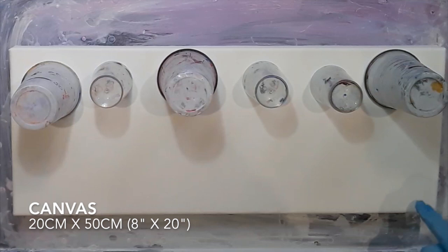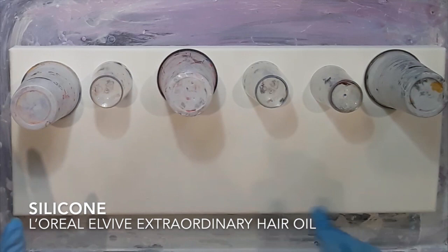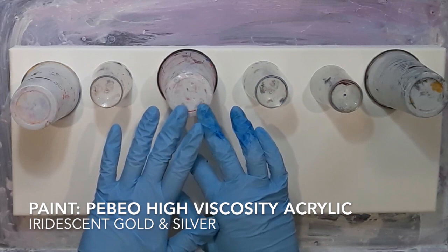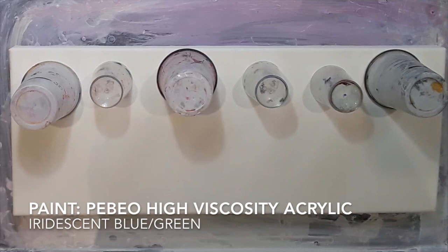So this is a 50 by 20 canvas and I'm using six flip cups and some odd colors for me. I'm using green. I hardly ever use green so that's going to be green and gold, blue, green and gold again and then sky colors. It's a very odd combination for me but we'll see how it goes.